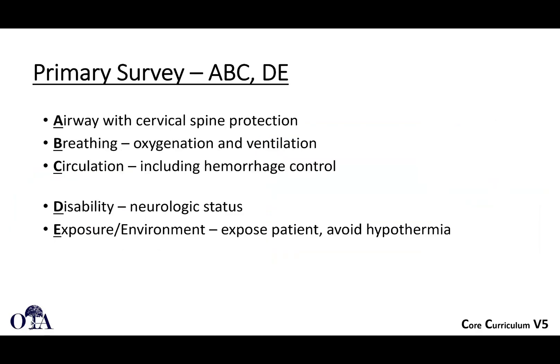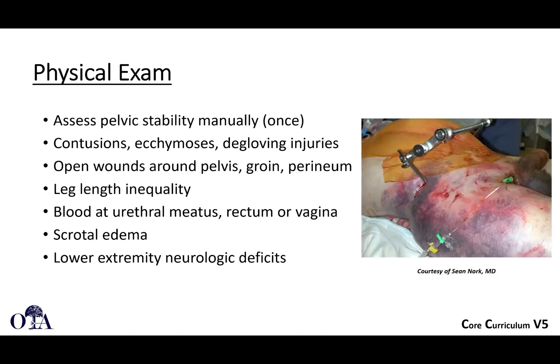The primary survey is ABCs — airway, breathing, circulation — plus D (disability/neurologic exam) and E (exposure). For physical exam, you assess pelvic stability manually. This is usually done only once because repeated manipulation can restart bleeding that may have slowed down or tamponaded.